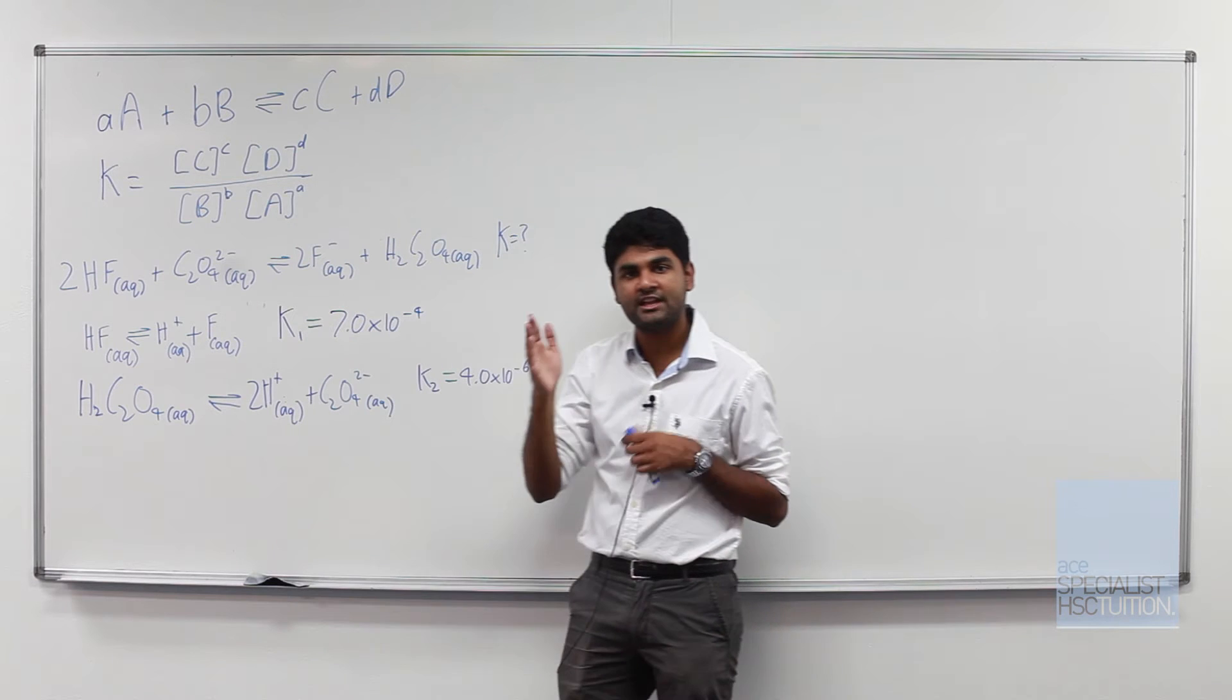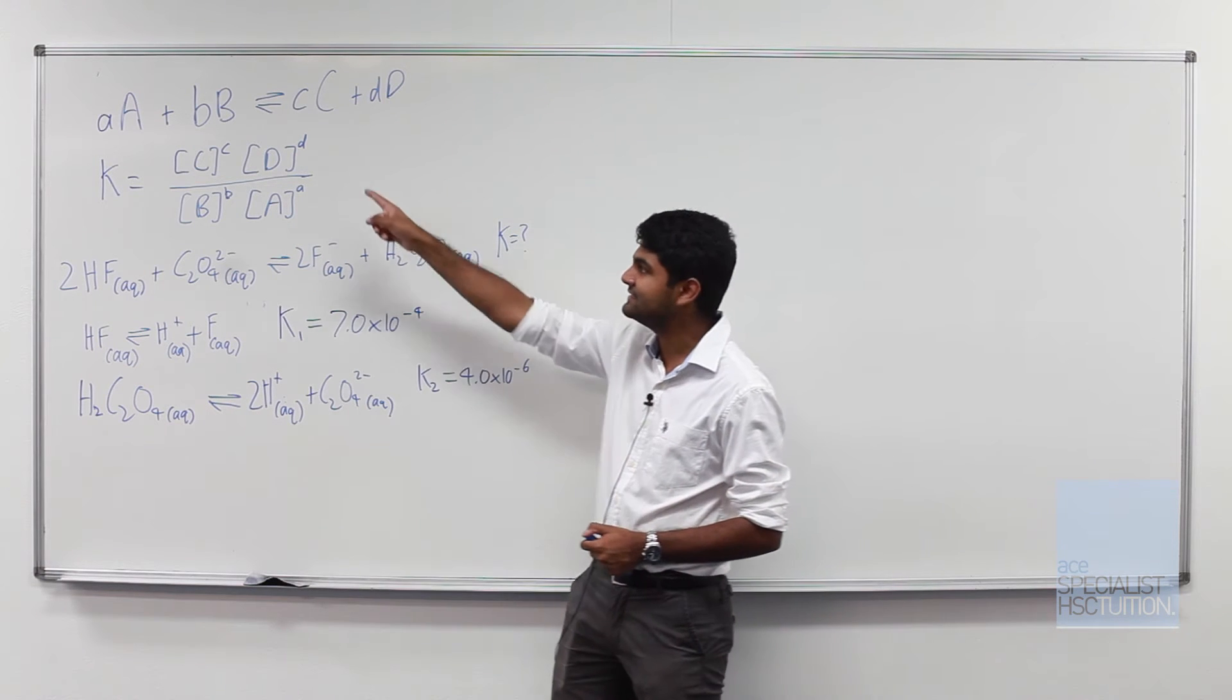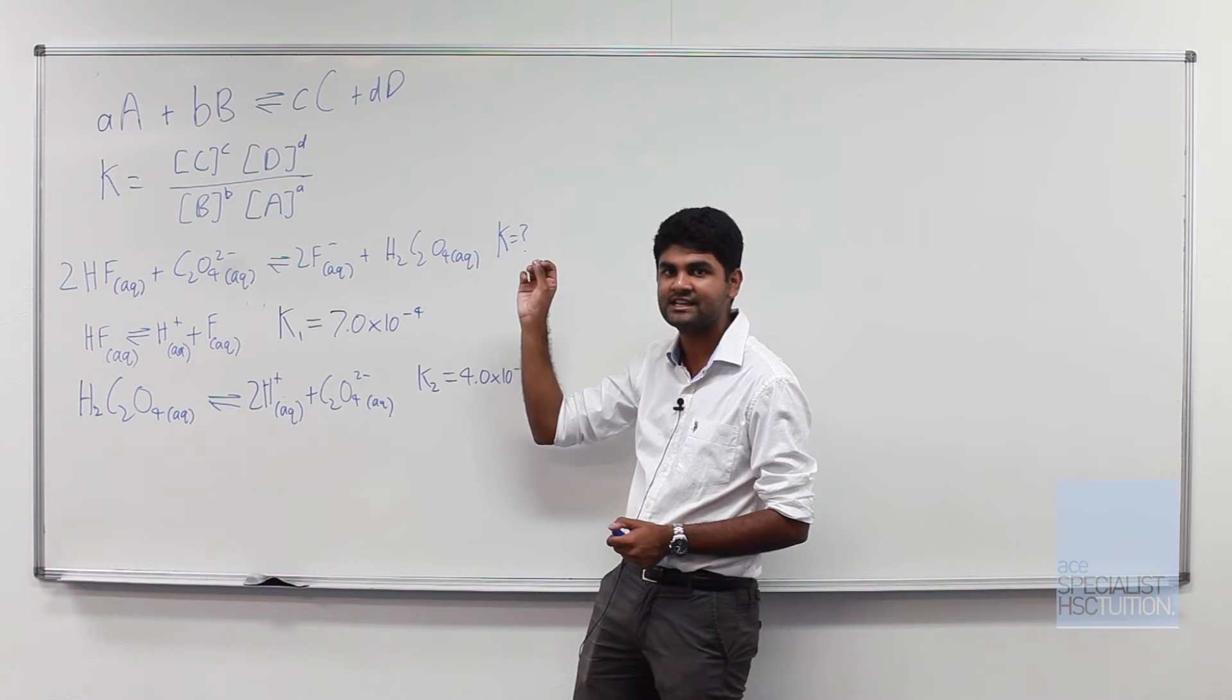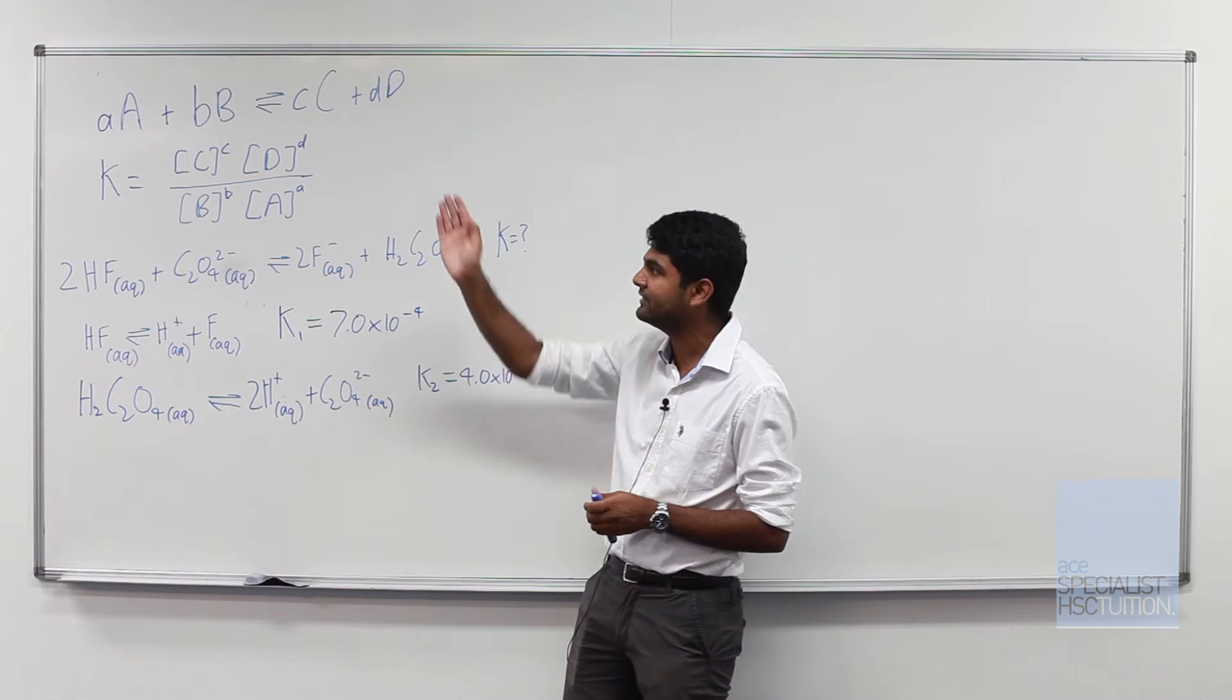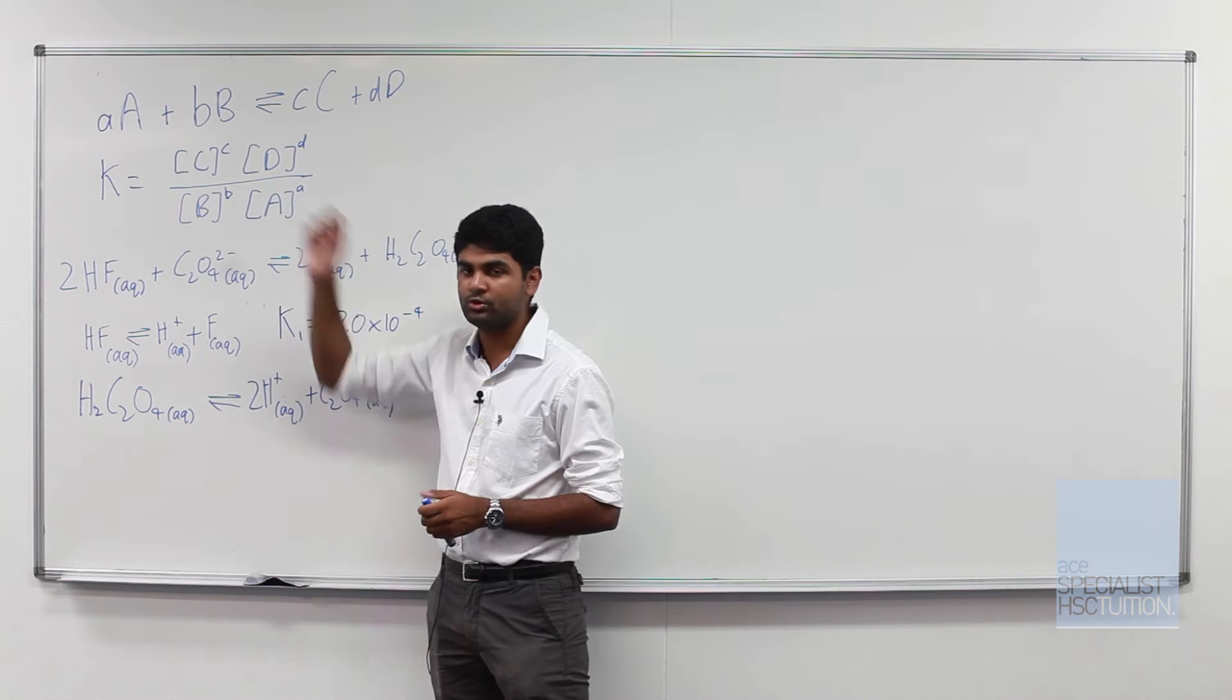Now if we have a very large K value, it tells us the equilibrium lies towards the products. If we have a very small K value, it tells us it lies more towards the reactants.